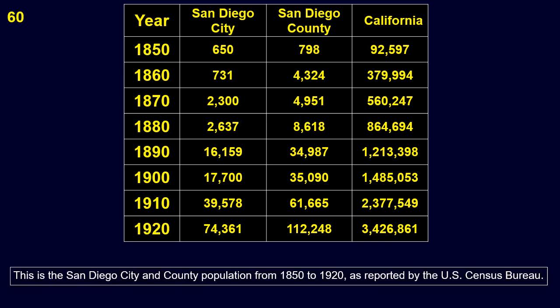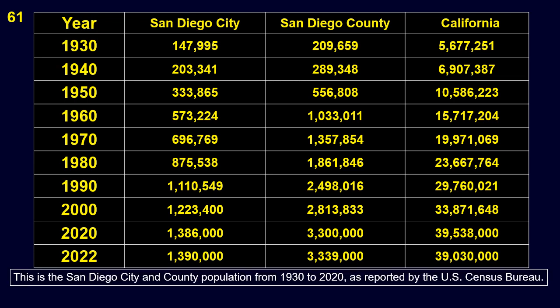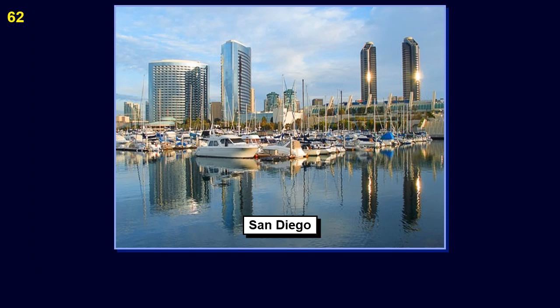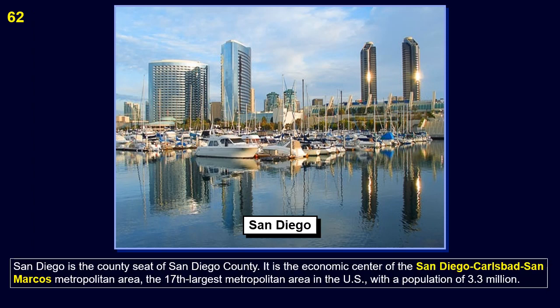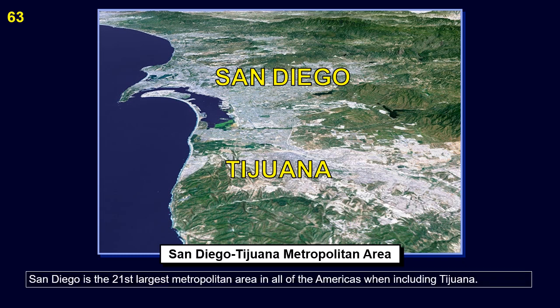This is the San Diego city and county population from 1850 to 1920, as reported by the U.S. Census Bureau. This is the San Diego city and county population from 1930 to 2020, as reported by the U.S. Census Bureau. San Diego is the county seat of San Diego County. It is the economic center of the San Diego–Carlsbad–San Marcos metropolitan area, the 17th largest metropolitan area in the U.S., with a population of 3.3 million. San Diego is the 21st largest metropolitan area in all of the Americas.